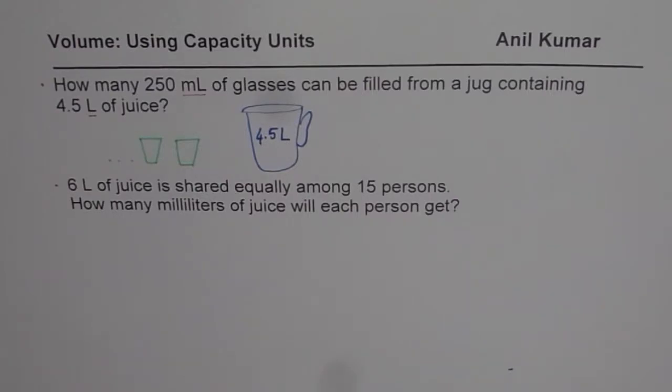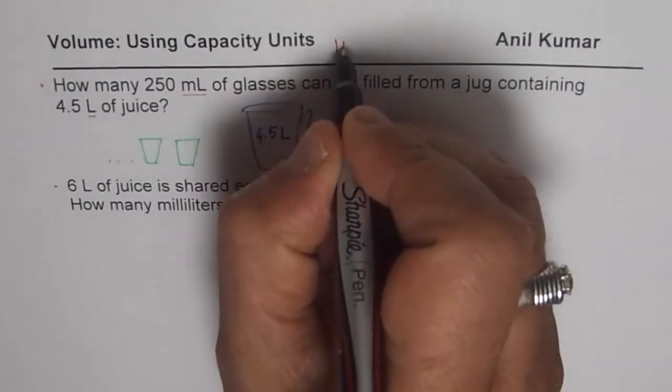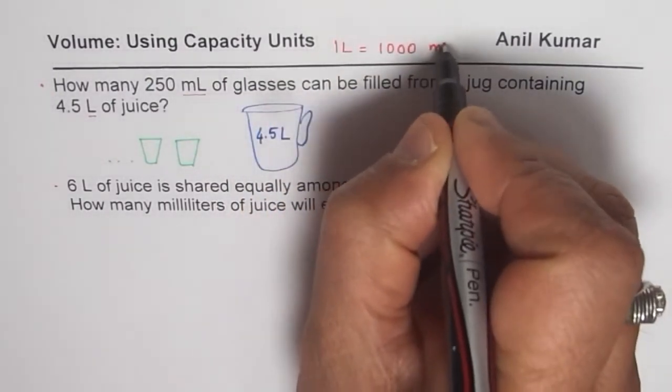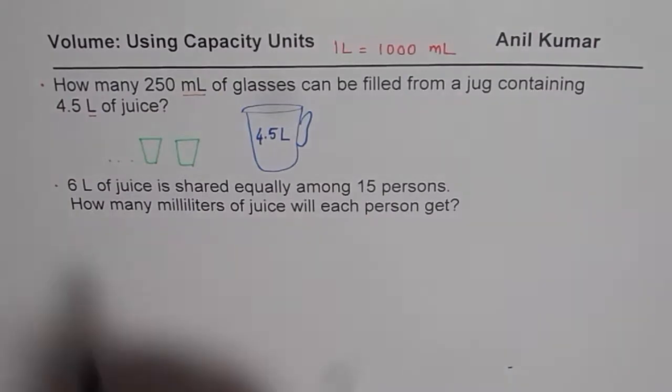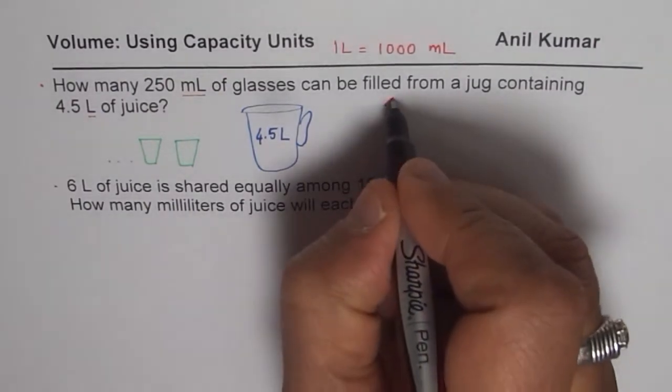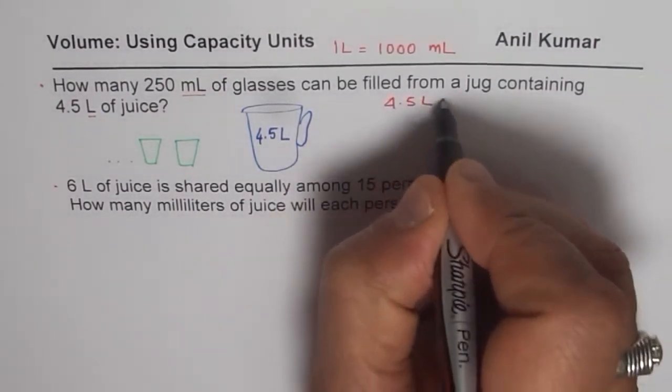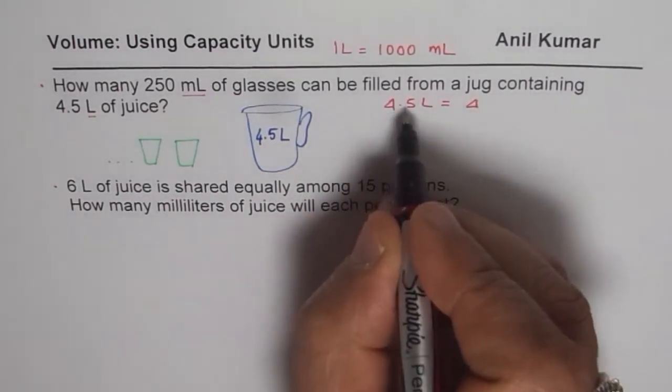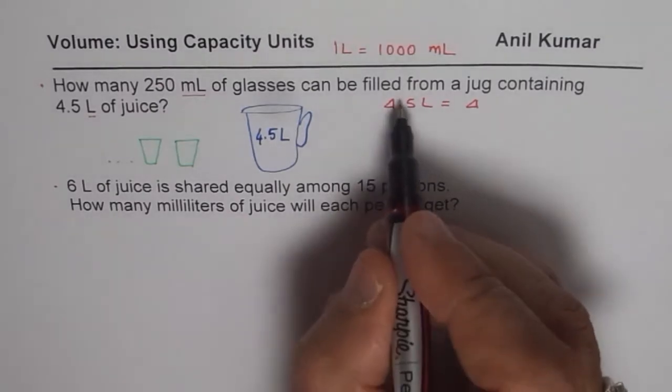Do you know the relation between liters and milliliters? Well, in 1 liter, we have 1,000 milliliters. Now, we are given 4.5 liters. Let us convert that to milliliters. So multiplying by 1,000 means 4.5 times 1,000. So 4,500. So 4,500 milliliters.